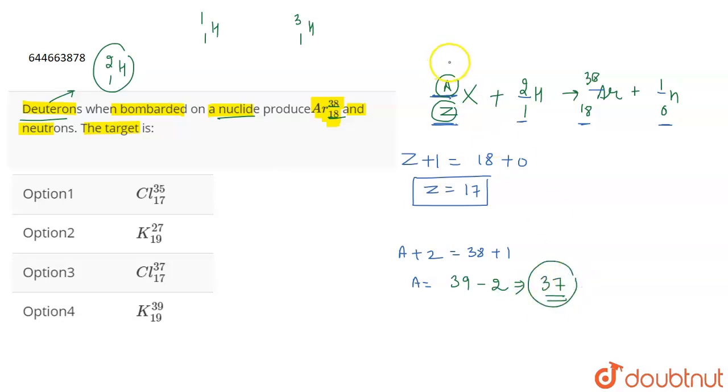So, you have A as 37 and Z as 17. It means that the nucleide is represented as 37-17. So, out of all the options given to you, which nucleide represents 37-17? Option 3 which is Cl. So, option 3 is going to be the correct answer for the question.